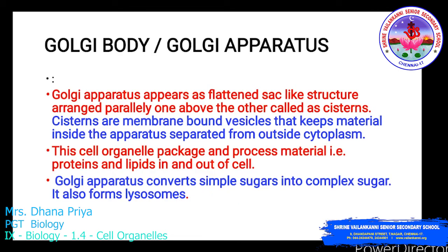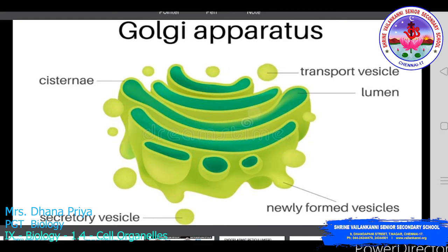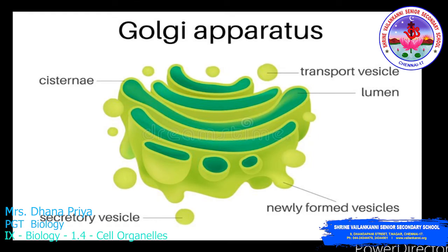Next is the Golgi body or Golgi apparatus, called dictyosomes in animal cells. The Golgi apparatus appears as flattened sac-like structures arranged parallel to one another called cisternae. The cisternae are membrane-bound vesicles that keep material inside the Golgi apparatus separated from the outside cytoplasm. This organelle packages and processes proteins and lipids in and out of the cell, converts simple sugars into complex sugars, and also forms lysosomes.